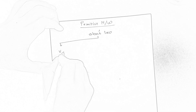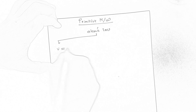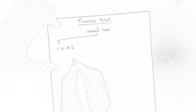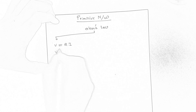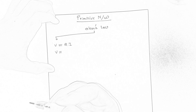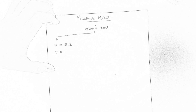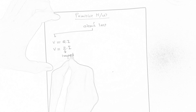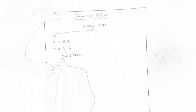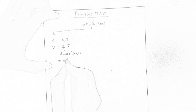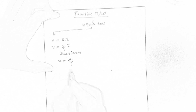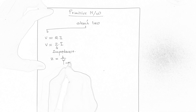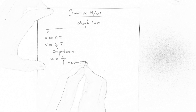In Ohm's law, we know that the voltage across the terminals of an element is equal to the resistance of that element multiplied by the current flowing through that element. In general form, the voltage across the terminals is equal to the impedance of that element multiplied by the current flowing through it. We know that impedance is equal to 1 upon admittance, where Y is admittance.